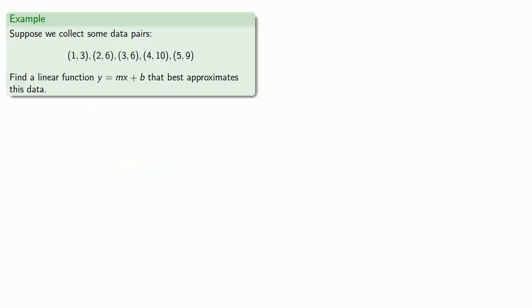So let's try it out. Suppose we collect some data pairs. And we want to find a linear function Y equals MX plus B that best approximates this data. So our input values are going to be 1, 2, 3, 4, and 5. And our corresponding observed output values are going to be 3, 6, 6, 10, and 9.